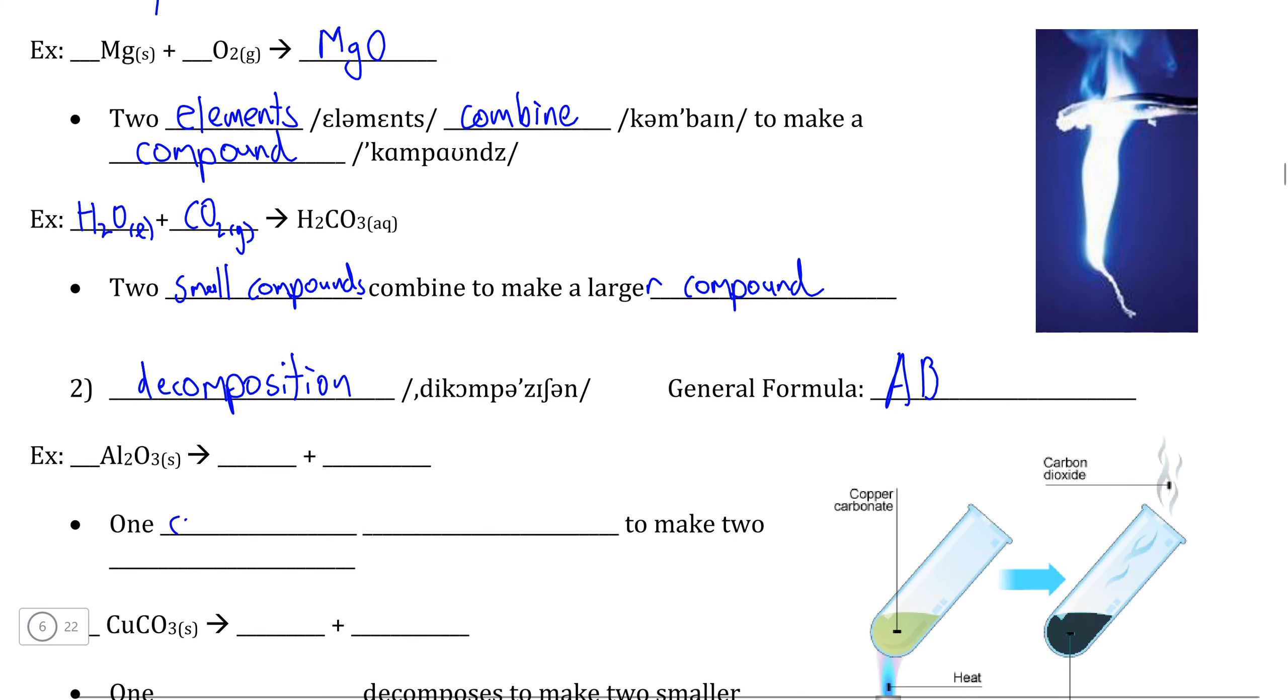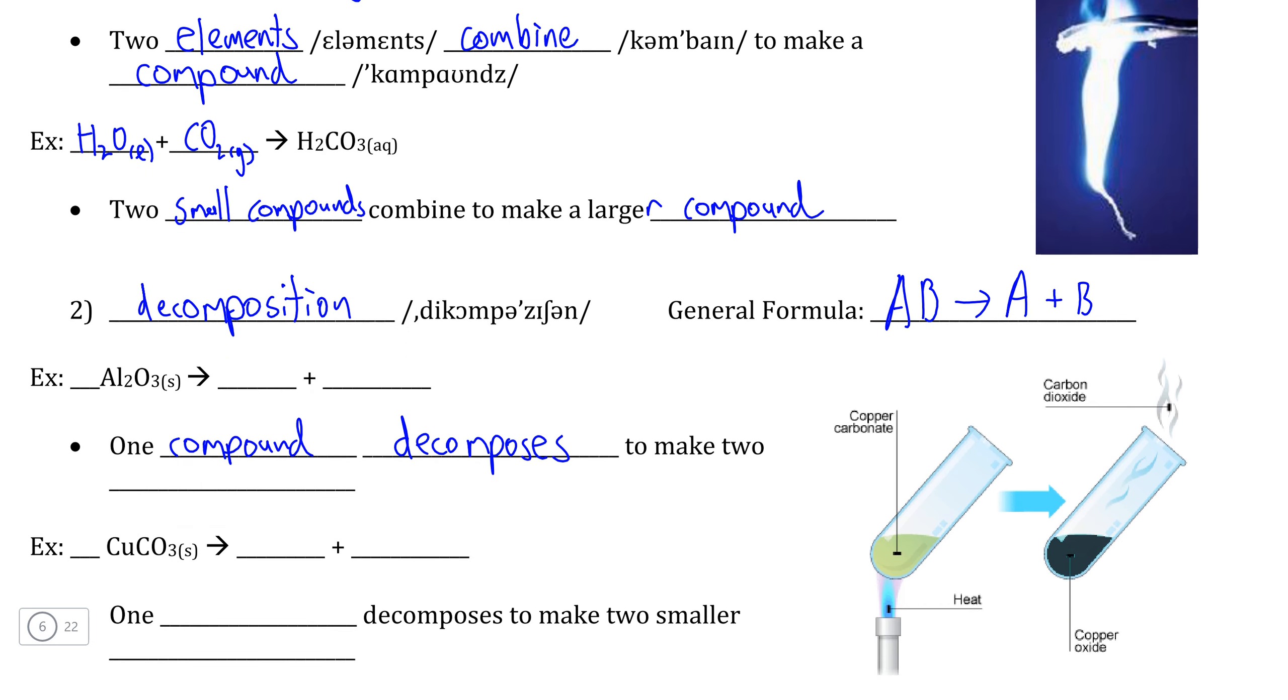And in this case, we take our compound and we can decompose it into the separate elements. So in this case, A and B decompose to produce elements A and B separate from each other.